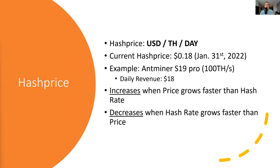The hash price metric shows some interesting things. When hash price is increasing, that will occur when the price of Bitcoin is growing faster than the network hash rate. On the opposite hand, hash price decreases when hash rate is growing faster than the price of Bitcoin. Let's dive into some examples of this over time.